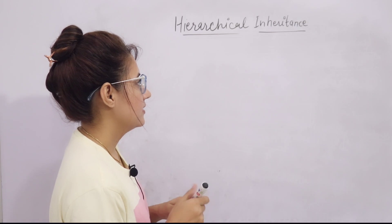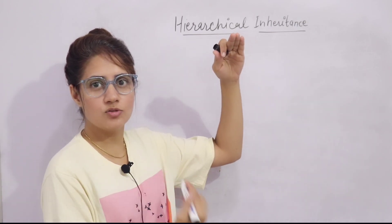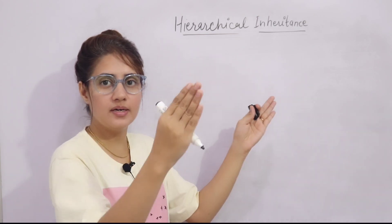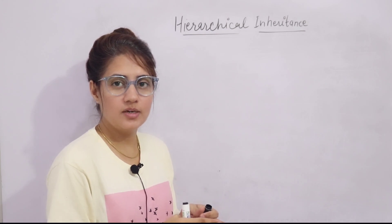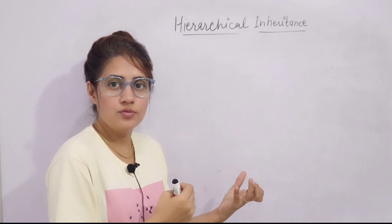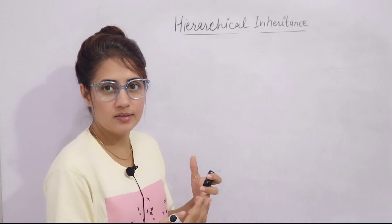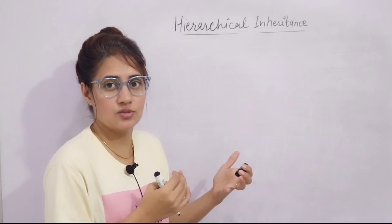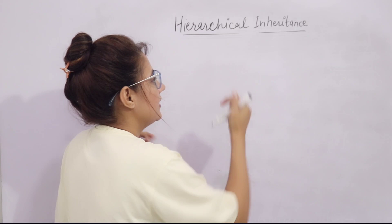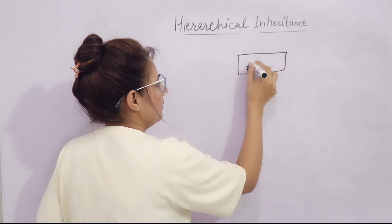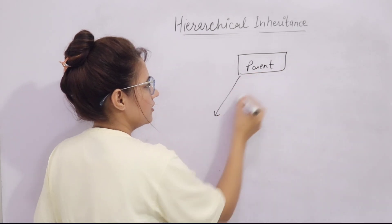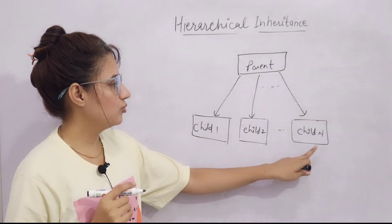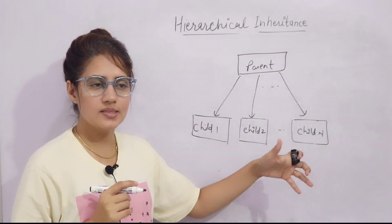So what is hierarchical inheritance? In single inheritance, one parent class, one child class. In multiple inheritance, we have more than one parent class and one child class. In multi-level, the child class can inherit properties, attributes, or methods from a derived class as well. Hierarchical inheritance means we have one parent class, and from this class you can derive multiple child classes — child 1, child 2, up to N.